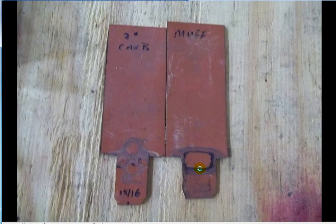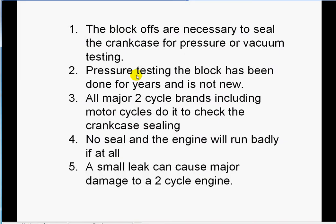The block off plates are necessary to seal a crankcase for pressure or vacuum testing. Pressure testing has been done for years. It's not new, but this is what you use to do it. It is a method to block off your ports.